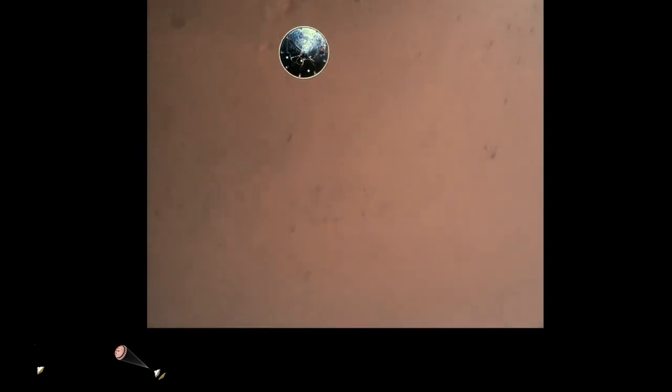Heat shield separated. Perseverance has now slowed to subsonic speeds, and the heat shield has been separated. This allows both the radar and the cameras to get their first look at the surface. Current velocity is 145 meters per second at an altitude of about 9.5 kilometers above the surface.